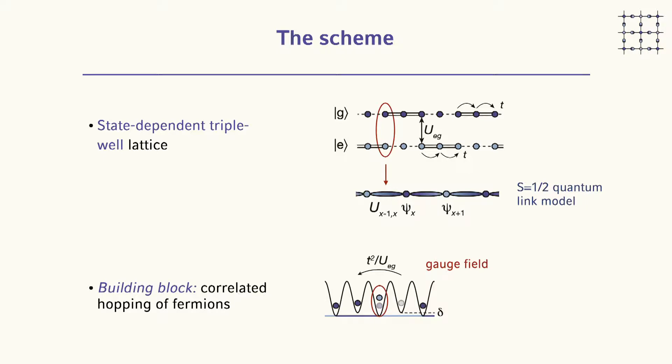The mapping to the spin-1/2 quantum link model can be worked out from the Hubbard implementation. The basic process connecting two sites is a second-order correlated tunneling process of strength T²/U: a light and dark blue atom both cannot move individually — one is blocked by single-particle detuning, the other by interaction energy — and the only thing they can do is hop together. This corresponds to a matter particle hopping with a link that is a spin-raising operator, changing the link site from G to E.